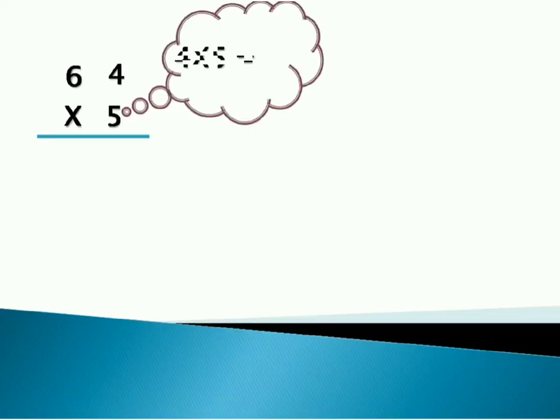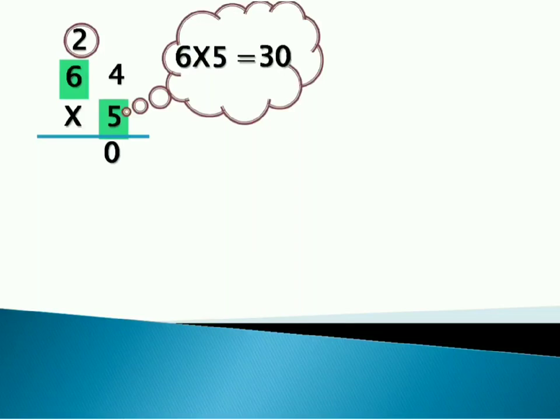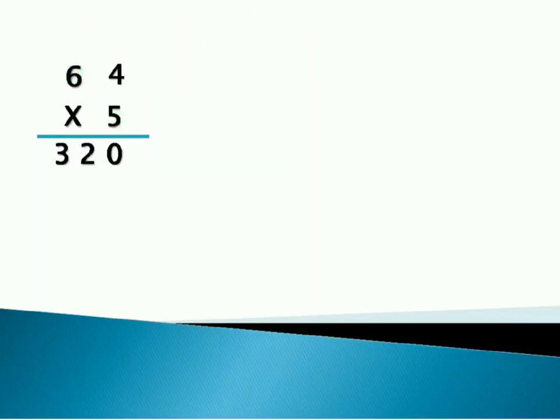For multiplication, you should know the tables. 64 multiplied by 5. Let's see the procedure. 5 into 4 is 20. 0 is at units place and 2 will be carry. Next, we will multiply 5 and 6. So 6 into 5 is 30. And 30 plus carry 2 is 32. And hence answer is 320.